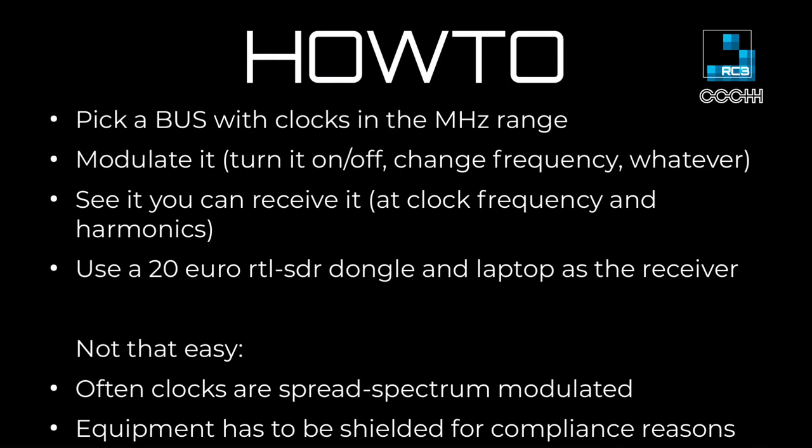To find a side channel, you pick a bus clocked in the MHz range — the more the better, because it radiates better. Find a way to modulate it — turn it on or off, change frequency, or whatever — and see if you can receive it at that clock frequency or its harmonics. Unfortunately it's not that easy, because devices cannot produce a lot of electromagnetic interference: clocks are often spread-spectrum modulated or the equipment is shielded for compliance reasons.